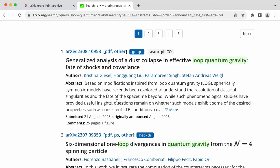So every arXiv paper has a unique number assigned to it. For instance, this paper by Christina Geisel, Hong Kong Liu, Parampreet Singh, and Stefan Wiegel has the identifier 2308.10953. What does that mean? Well, the first part of this, which is the 2308 part, that refers to the year, the first two digits refer to the year